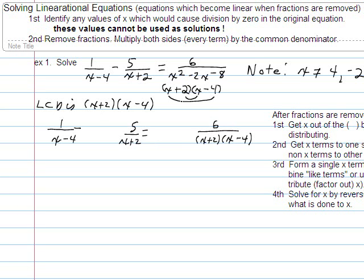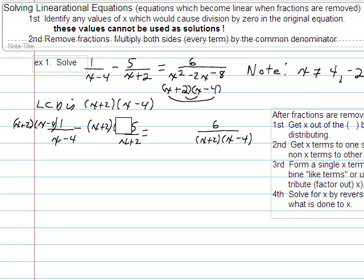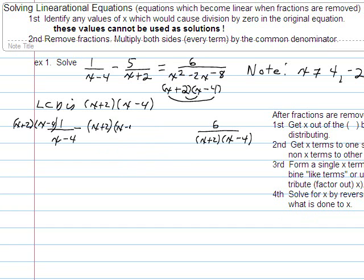And now I take my common denominator and I multiply it by every one of these terms, x plus two times x minus four. Now I know this seems like a lot of work, but if you go through the steps, you tend not to make the mistakes. That's got to be an x minus four there. So, that was times five over x plus two. And that's equal to x plus two times x minus four times my last fraction.